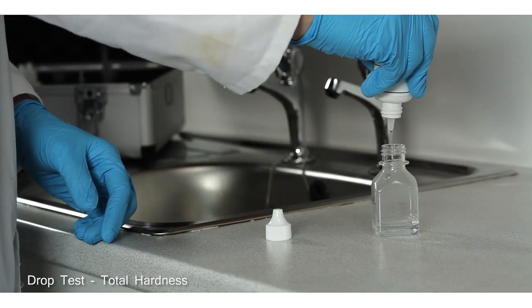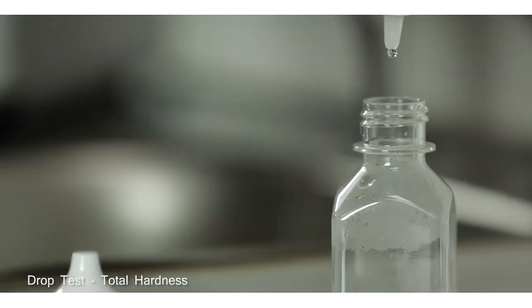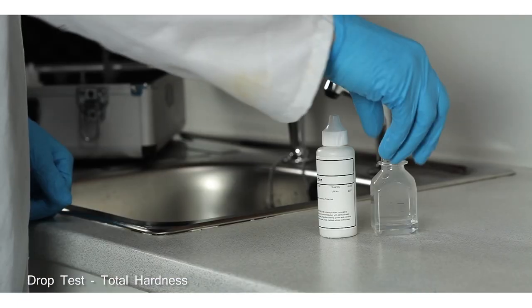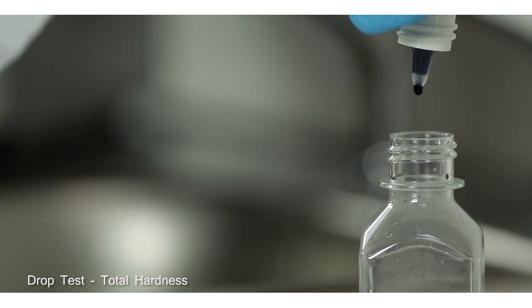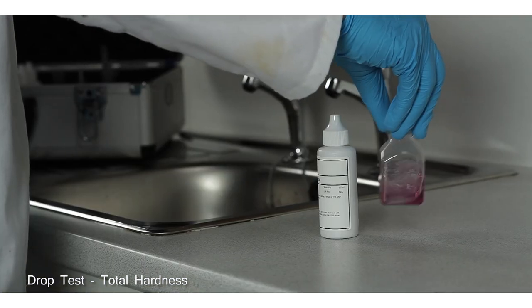Add four drops of TH2 per 20 ml and swirl to mix. Then add four drops of TH5 and swirl to mix.